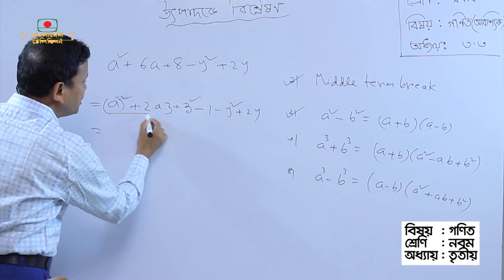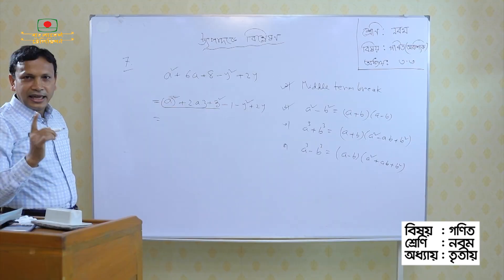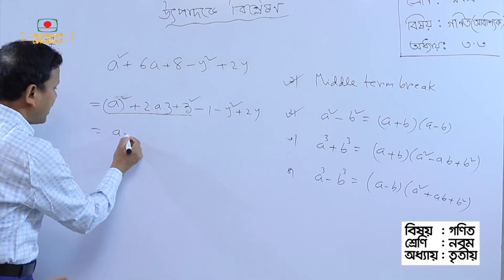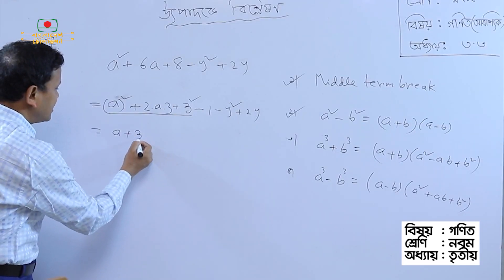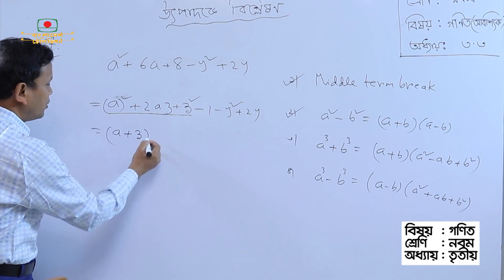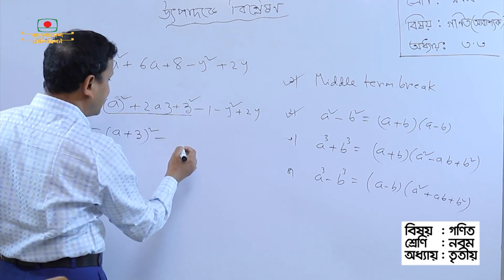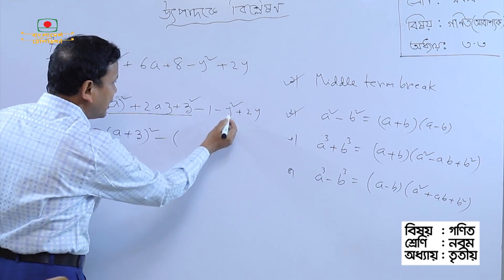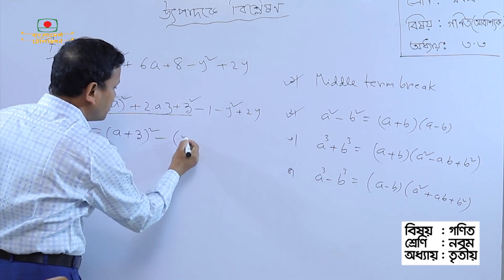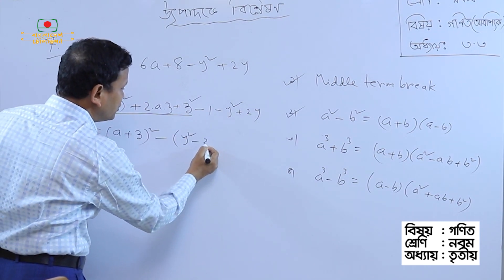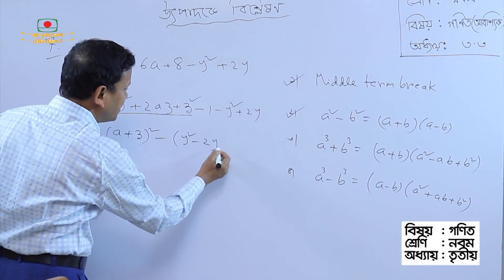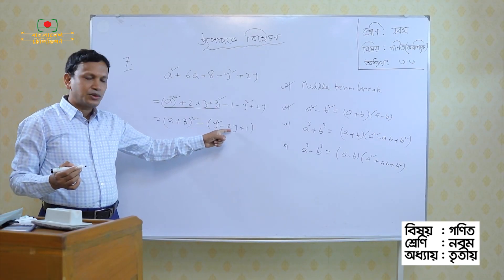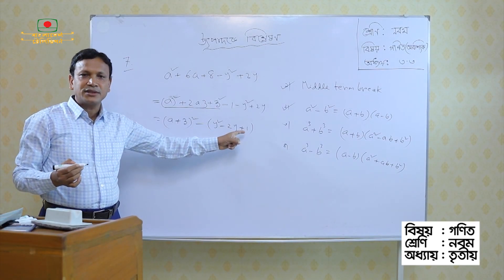x² minus 2, three holy square. So, a plus three holy square minus. I will say minus. So, I will say y² minus 2y plus 1.